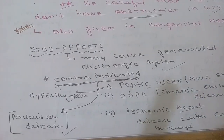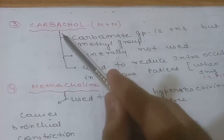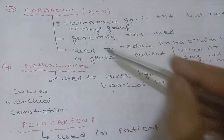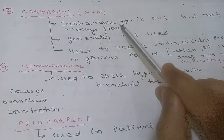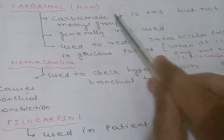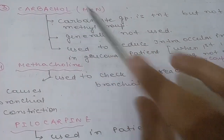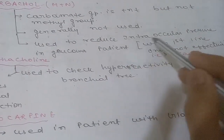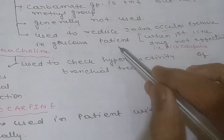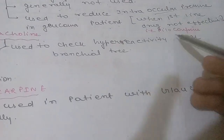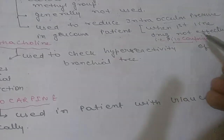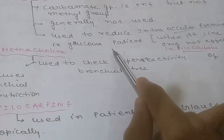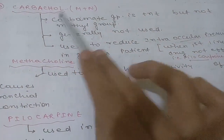Carbachol stimulates both muscarinic and nicotinic receptors. It has a carbamate group but not a methyl group. Carbachol is rarely used; it is used to reduce intraocular pressure in glaucoma when the first-line drug is not effective. Pilocarpine is the first-line drug for reducing intraocular pressure in glaucoma; carbachol is given if pilocarpine is not working.